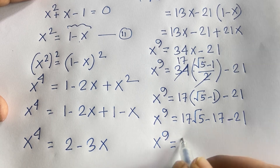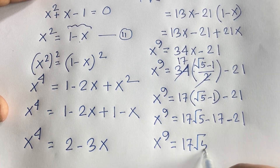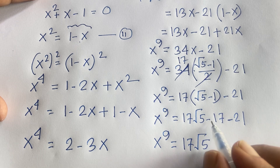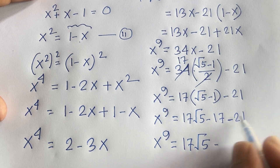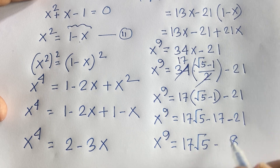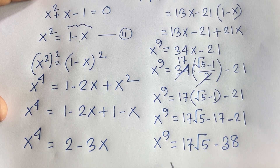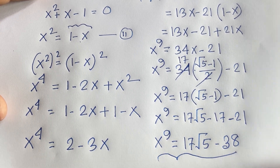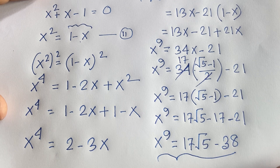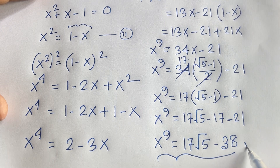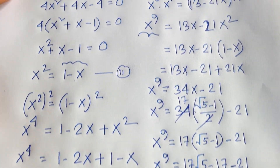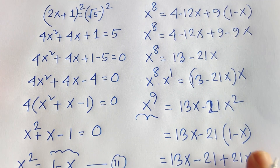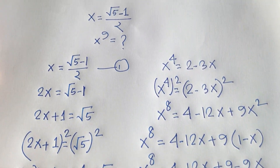So our final answer is x to the power 9 is equal to 17√5 minus 38. This is our final answer to this tricky math question. Thank you all — if you enjoyed this video, please subscribe to my channel for more interesting videos. Goodbye, take care.